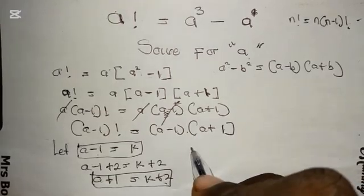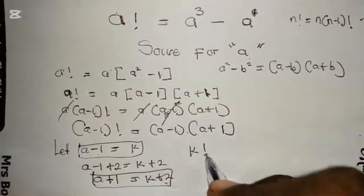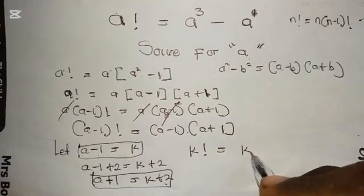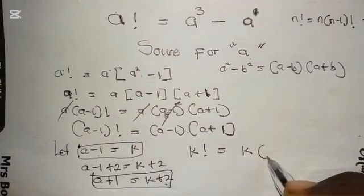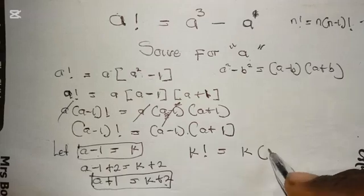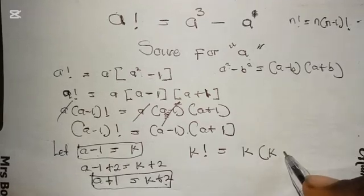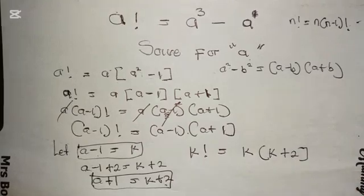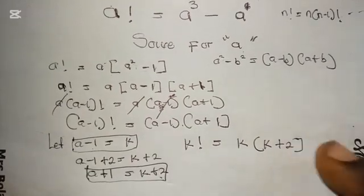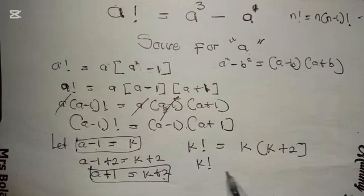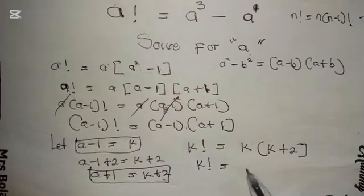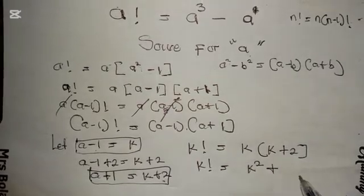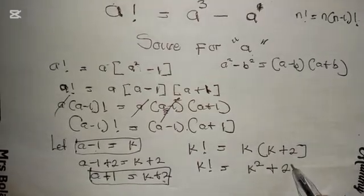Substituting into our equation, we get k factorial equals k times (k plus two), which expands to k factorial equals k squared plus two k.